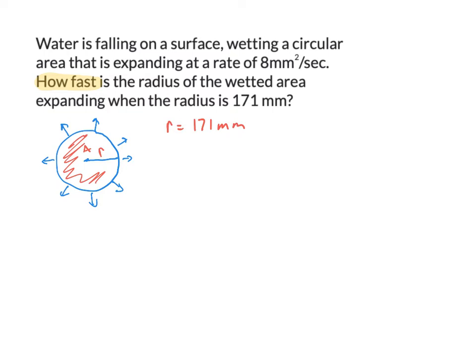The circular area is expanding at a rate of 8 millimeters squared per second. Since rates are derivatives, that means dA/dt equals 8 millimeters squared per second. I also want to list what I'm trying to find. How fast the radius is expanding is also a rate — a derivative. So what I'm trying to find is dr/dt. I'll put a question mark there to remind myself what I'm looking for.